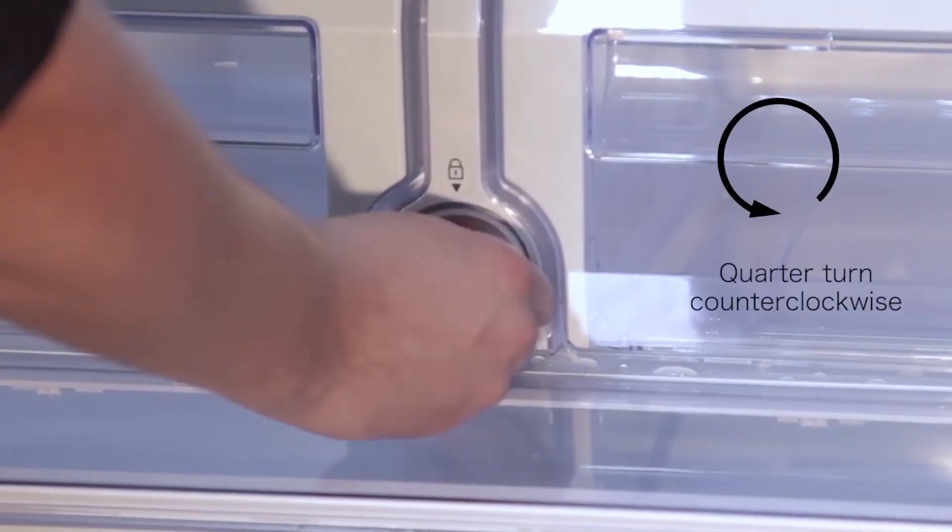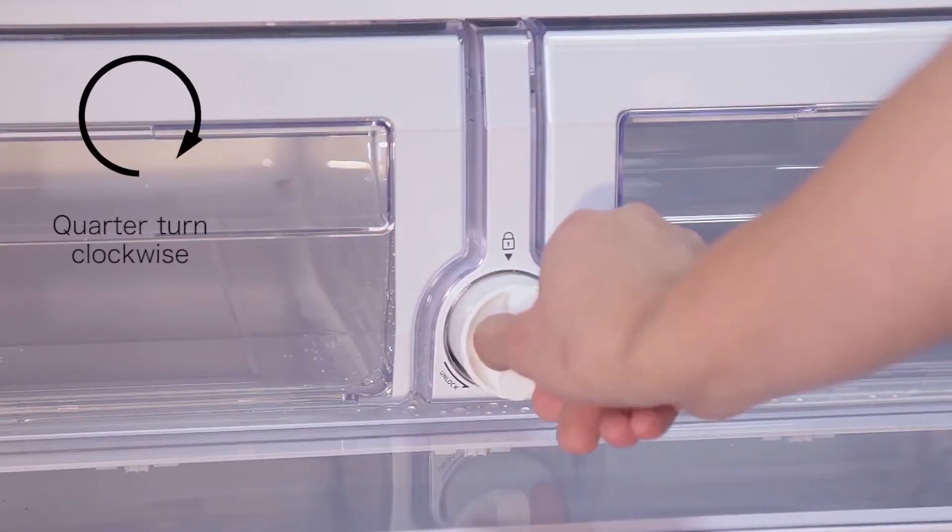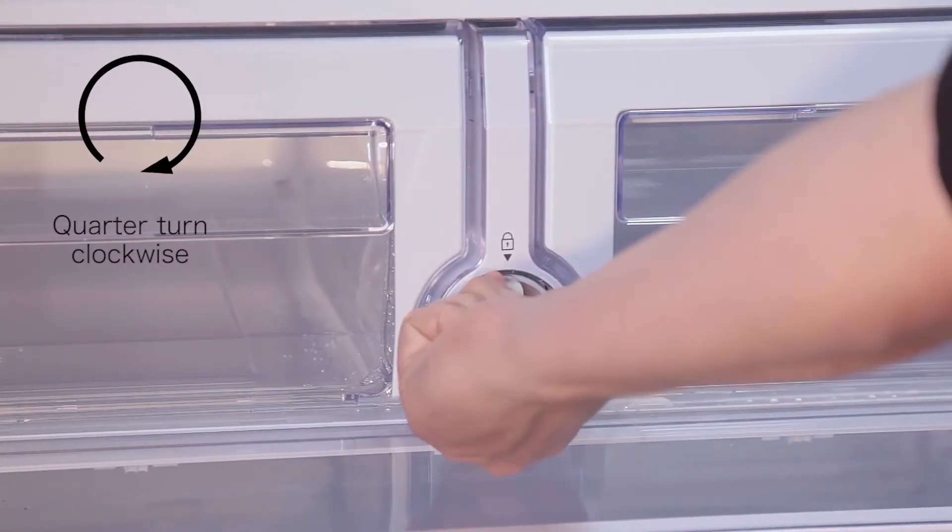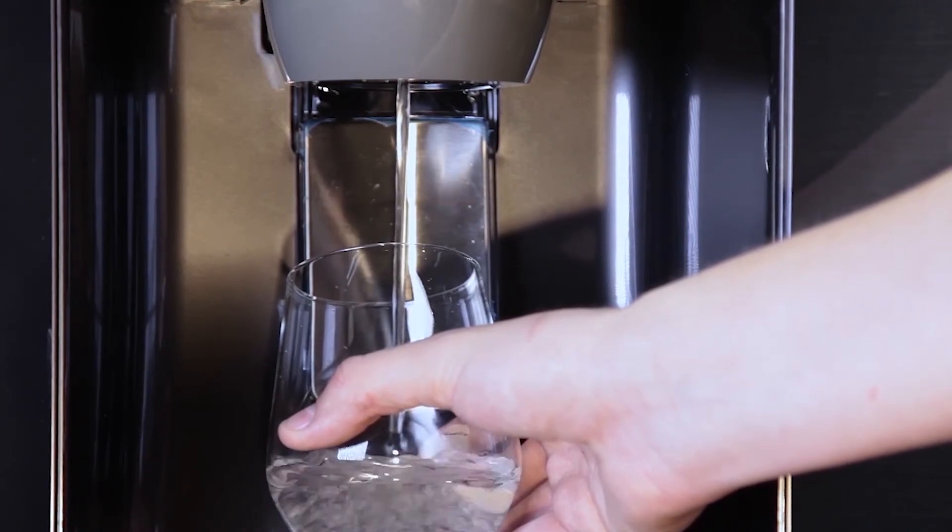Then take down the original refrigerator filter and install bypass if necessary. Follow water filter and refrigerator instructions to flush before first use.